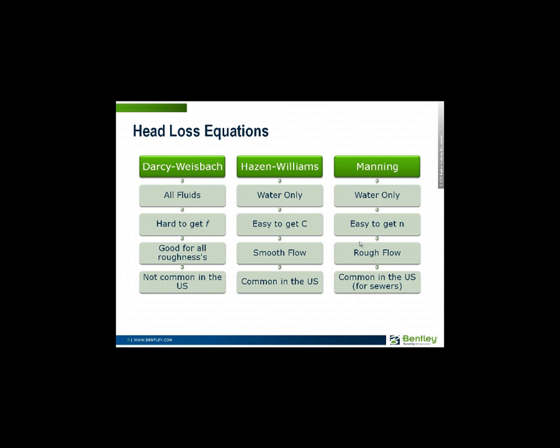Hazen-Williams equation is a water equation, which means it's water and wastewater. People represent the carrying capacity of this by a factor called C and we have a pretty good feel for C values, a lot better than we do for Fs. It's best for smooth flow and it's widely used in the U.S. and many places around the world.